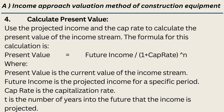Step 4: Calculate Present Value. Use the projected income and the cap rate to calculate the present value of the income stream. The formula is: Present Value = Future Income / (1 + Cap Rate)^n, where Present Value is the current value of the income stream, Future Income is the projected income for a specific period, Cap Rate is the capitalization rate, and T is the number of years into the future that the income is projected.